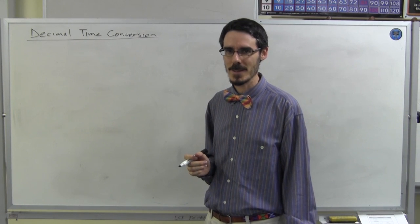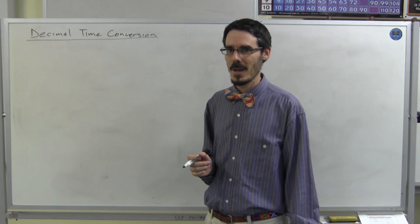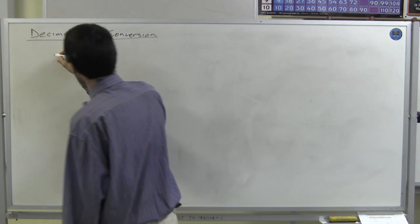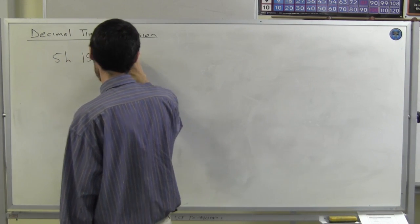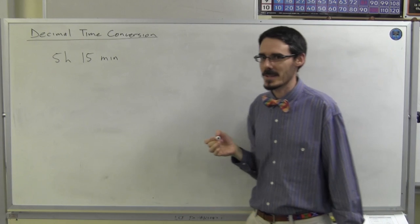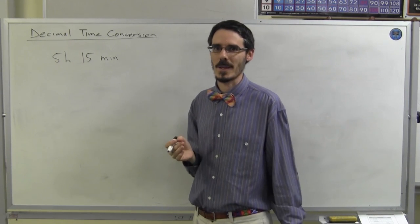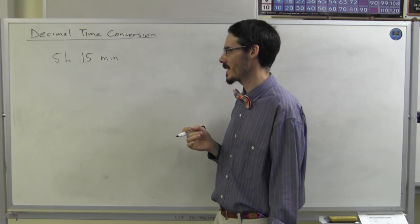So today's topic is Decimal Time Conversion, that's where I give you something like 5 hours 15 minutes and you need to write that as 5 point something hours. How are we going to do that?